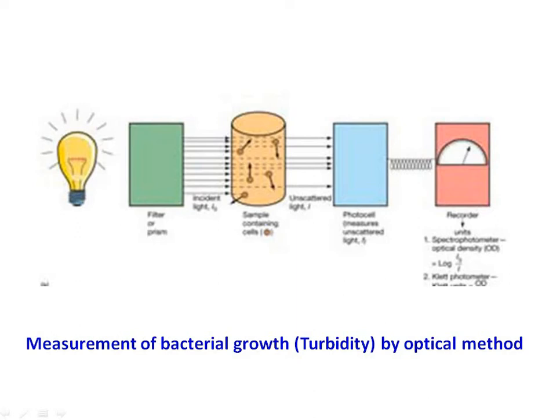turbidity readings act as an estimate of cell number or cell mass. By plotting semi-logarithmic versus time, the growth rate of microbial culture is obtained and used to calculate the generation time of the growing culture. Such a curve can contain data for both cell number and cell mass, allowing for an estimate of both parameters from a single turbidity reading.